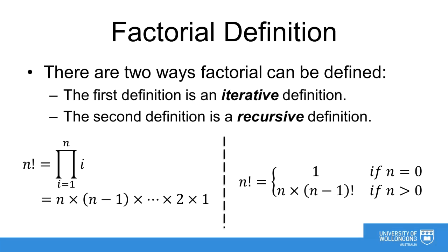In the second case, for all values of n larger than 0, we define the factorial of n as being equal to n times the factorial of n-1.